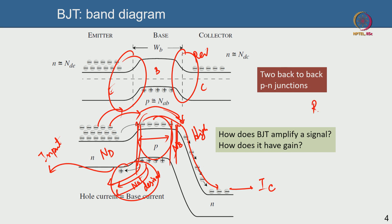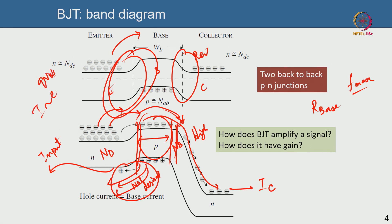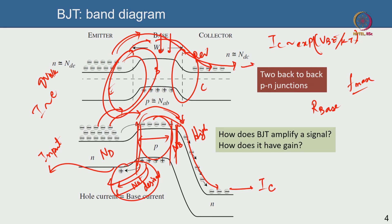However, a lower base doping leads to high base resistance, which is very bad for noise and for cutoff frequency fmax. The BJT amplifies because a small change in base-emitter voltage causes an exponential change in current — e to the power qVBE/kT. Most emitter current reaches the collector, so collector current also depends exponentially on VBE. A small base current triggering a small VBE change leads to an exponentially large change in collector output current.